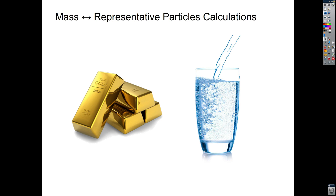Welcome. This is a quick vodcast on how to calculate between mass and representative particles. Some of the things in chemistry you want to know is how many atoms or how many molecules are in a certain amount of mass. For example, here you have a thousand grams of a gold bar — how many atoms of gold are actually in that gold bar? Or you have a certain amount of water — how many water molecules are going to be in that certain mass of water?